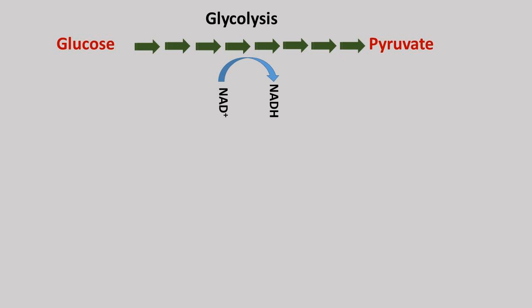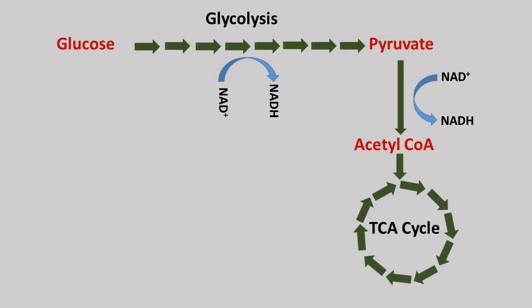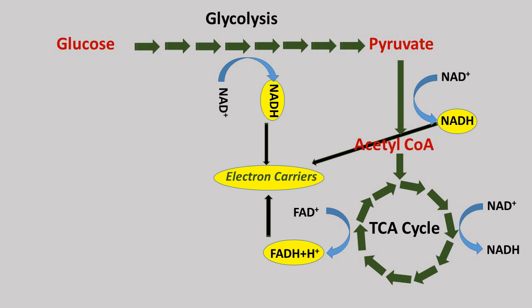The pyruvate produced in cytosol is first transported into mitochondria and converted into acetyl coenzyme A by reducing oxidized NAD into NADH. This acetyl coenzyme A enters into citric acid cycle and is further oxidized by producing reduced NAD and reduced FAD besides ATP. So you can see in the end, we obtained these two electron-carrying molecules in reduced state: reduced NAD and reduced FAD.